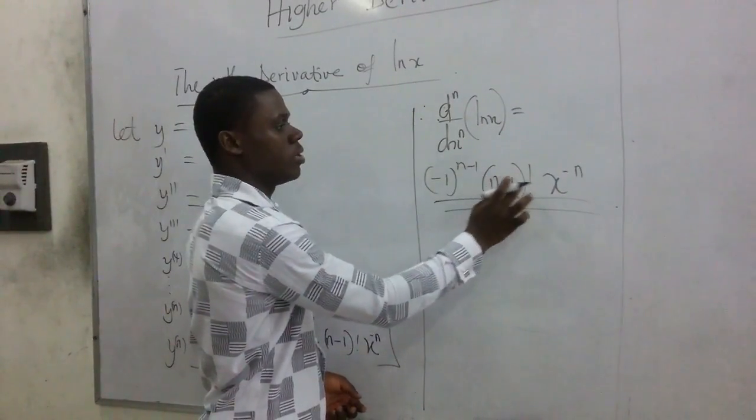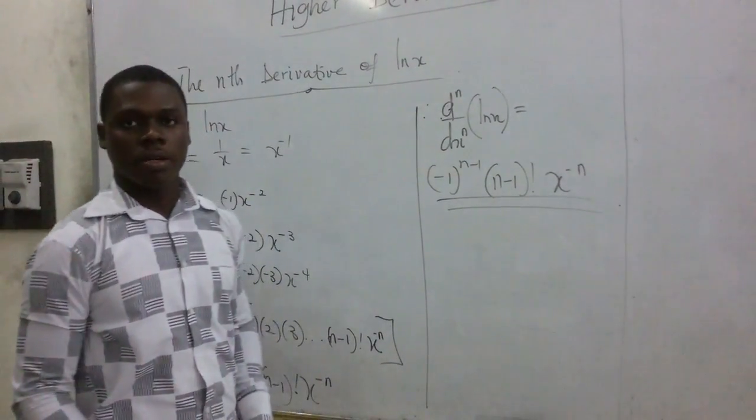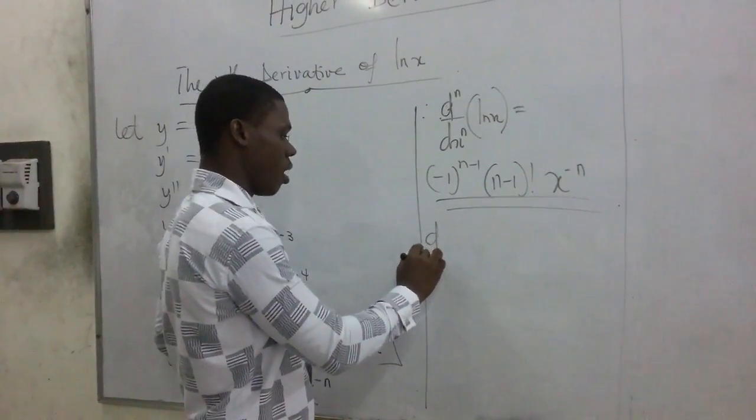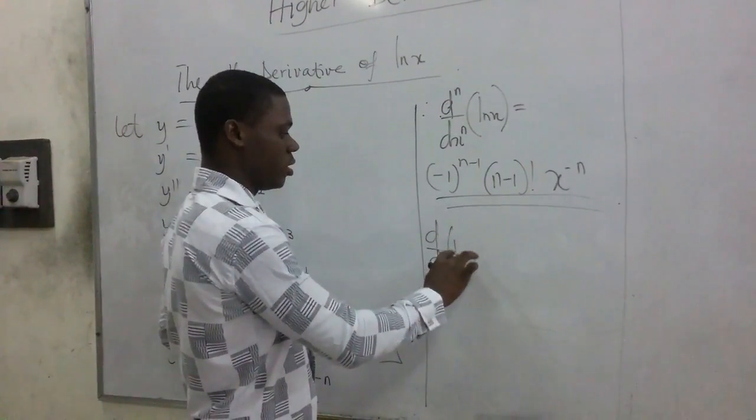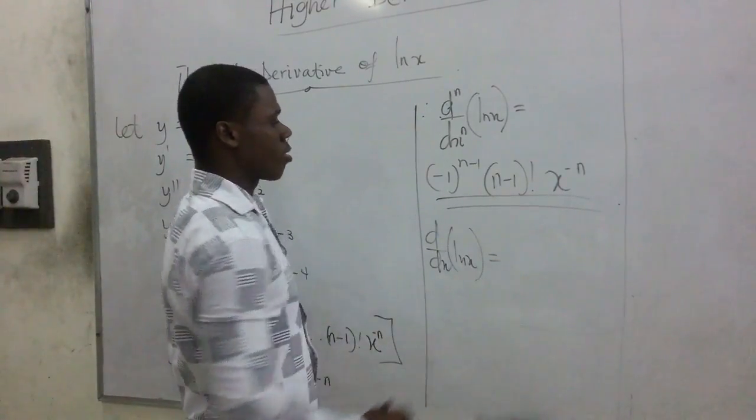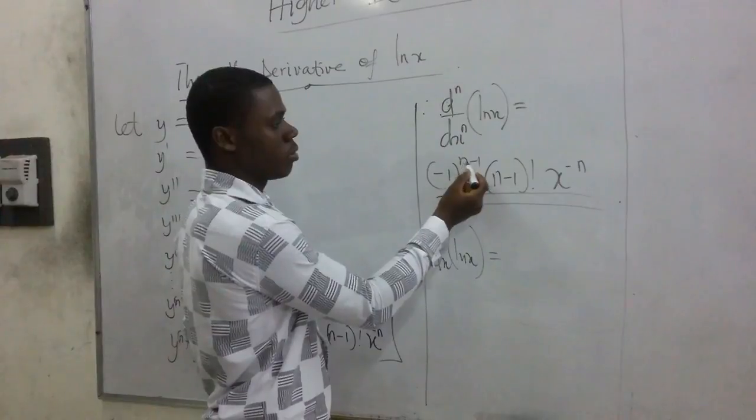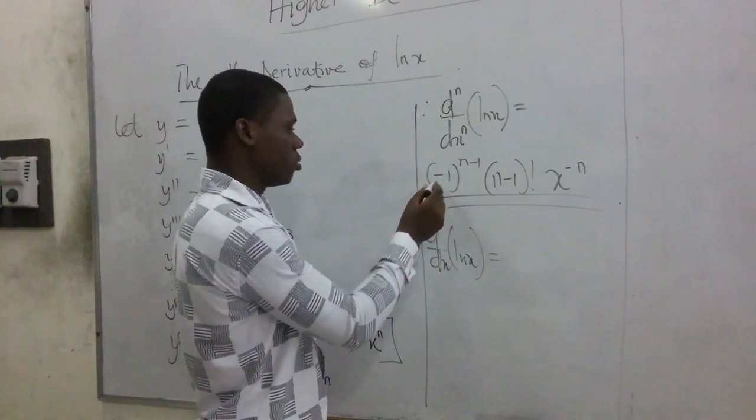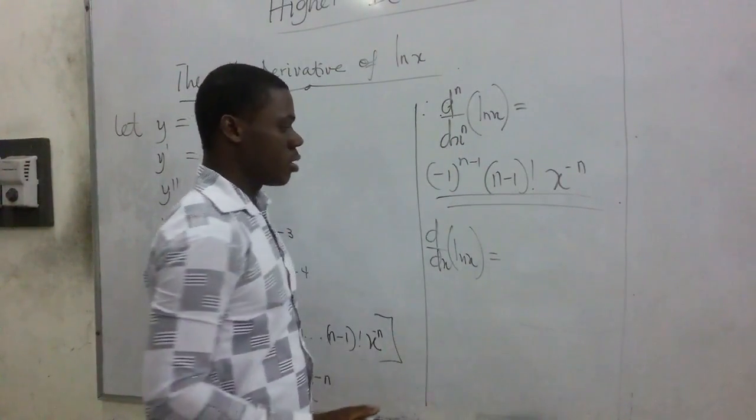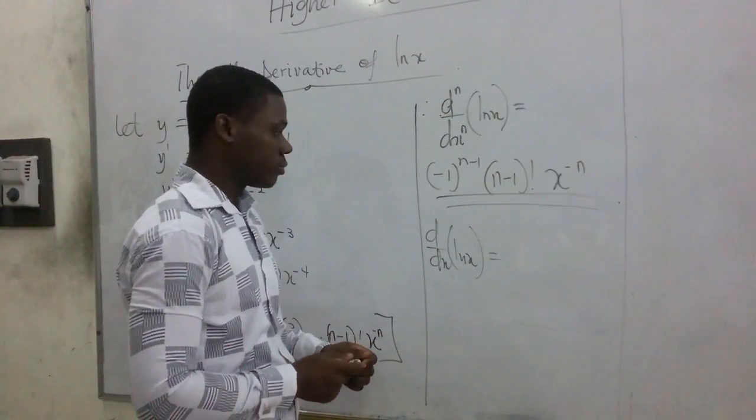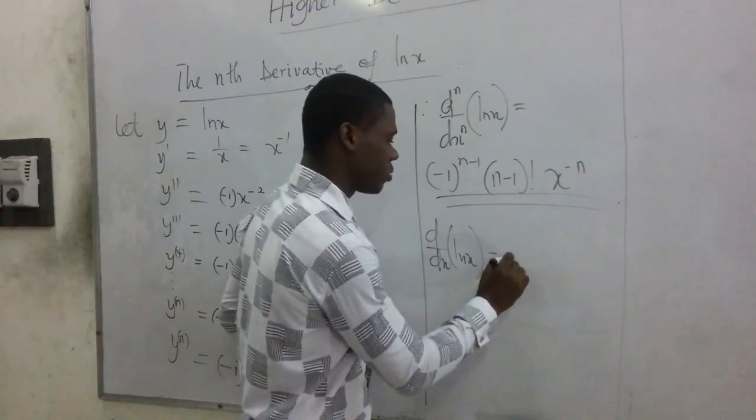So to find the first derivative, I have d/dx of ln(x). So I put 1 here to realize that 1 minus 1 gives us 0. So negative 1 raised to power 0 is going to give us 1. We have 1 here.